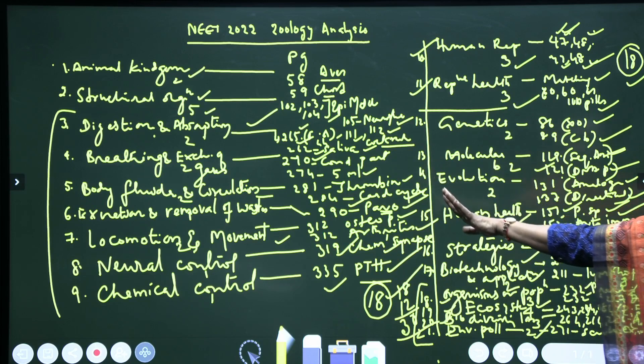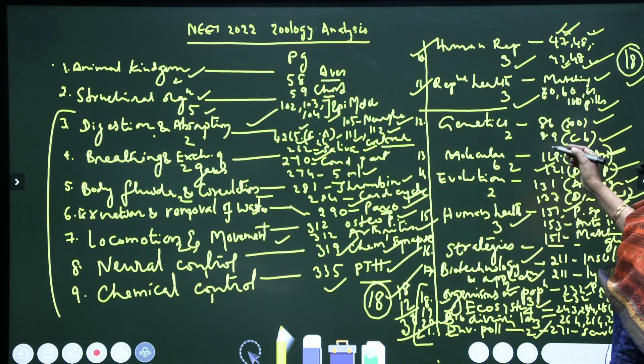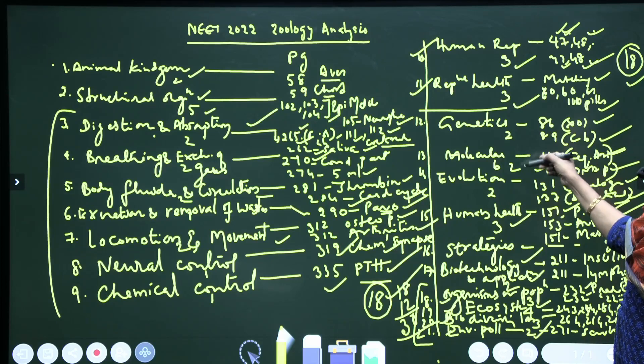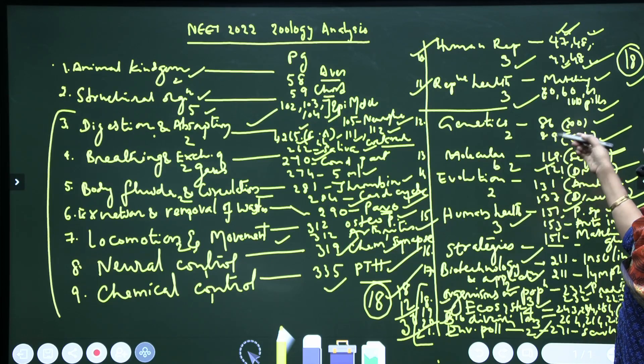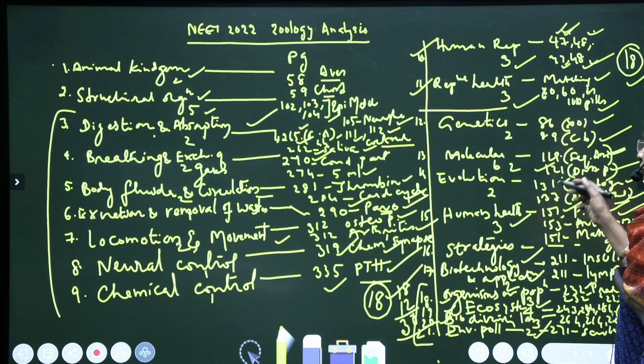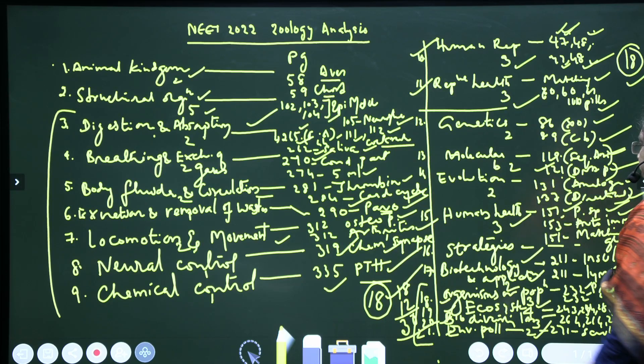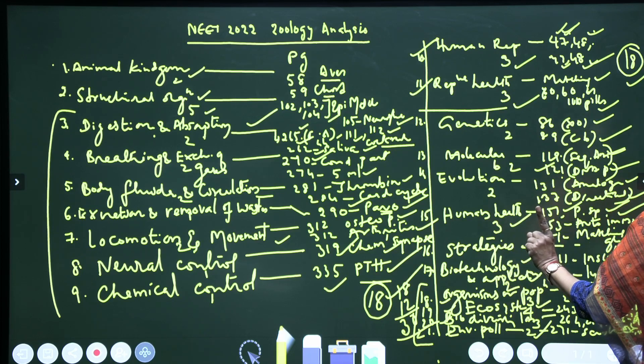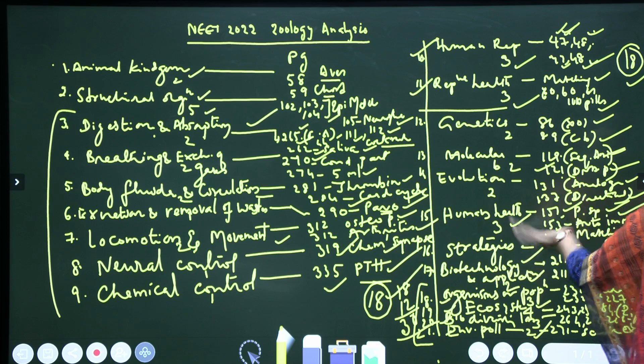So here, Genetics every time, Molecular Basis of Inheritance: four questions are given. Botany part also will be getting two more questions. Evolution: two questions only given, but every year two to three questions will be given. Human Health will be getting three questions. Strategies will be getting one question. Biotechnology and Applications: insulin is very important.